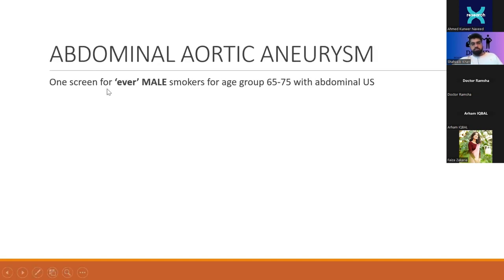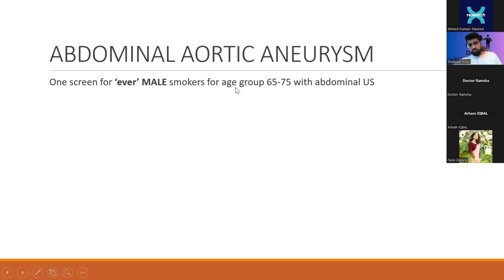Abdominal aortic aneurysm screening is always for males — never routinely for females. This is done once between ages 65 to 75 in male ever-smokers — meaning anyone who has smoked at any point in their life, regardless of whether they quit 30 or 40 years ago. The similarity with osteoporosis: both start at age 65, both done once — one for females with DEXA scan, one for males with abdominal ultrasound.